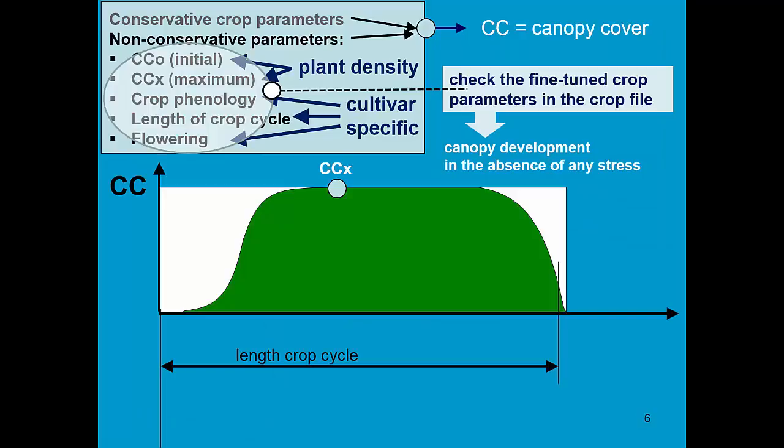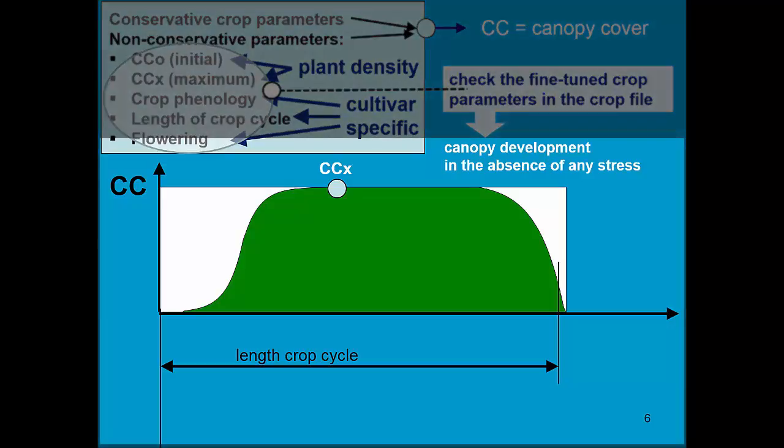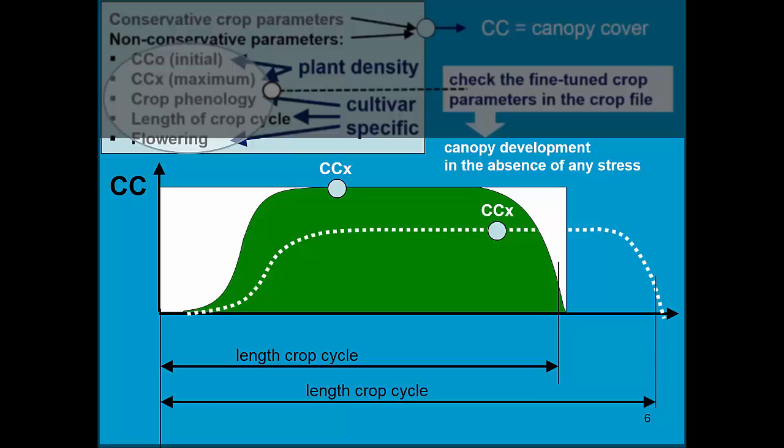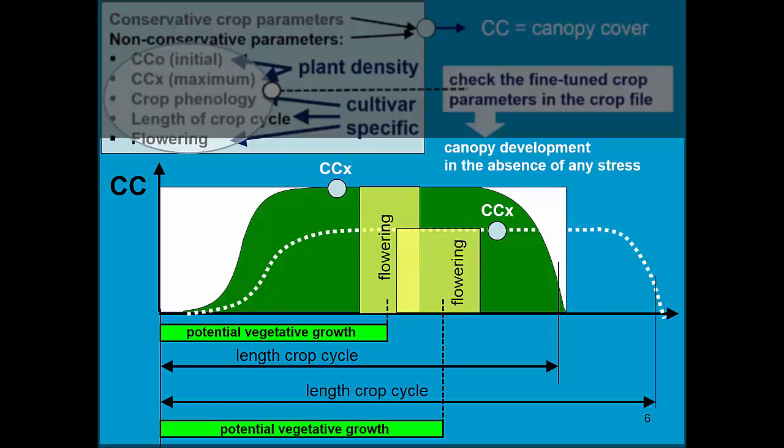So we have to check the finer-tuned crop parameters in the crop file. Here we see the canopy development in the absence of any stress as displayed in the crop file. But in reality, you might have a much longer crop cycle and a lower canopy cover. And also the flowering, which determines the period of potential vegetative growth, might become later. So the first thing to do is to check if the crop file was properly tuned.